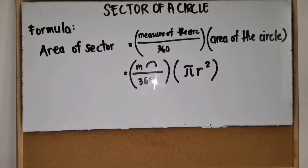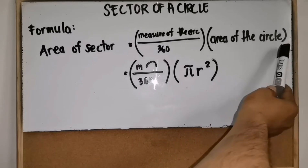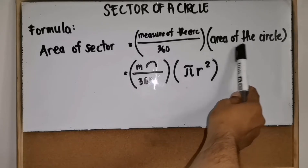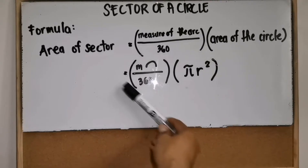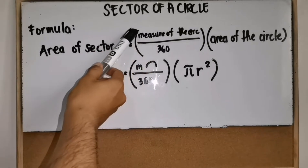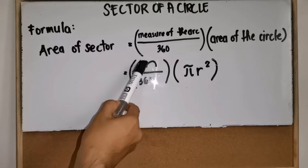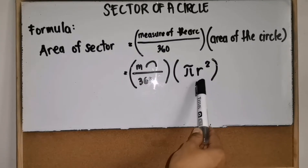Now, how do we solve the sector of a circle? The formula is: area of a sector equals the measure of the arc divided by 360, times the area of the circle. Since the area of a circle is pi r squared, we can rewrite the formula as: area of sector = (measure of arc / 360) × π r².